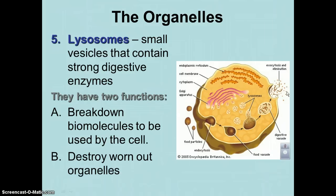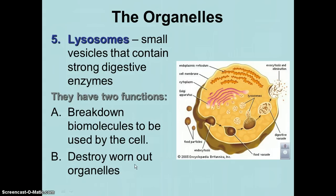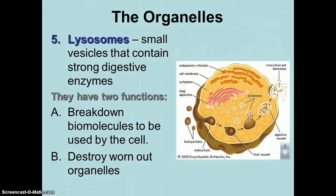The lysosome can also destroy worn-out organelles — remember we talked about how it could be the cell's garbage dump. This could be a mitochondria or a centriole. What will happen is the lysosome will break down those parts, and the proteins that made up that centriole, for example, will be recycled to make new and better ones.